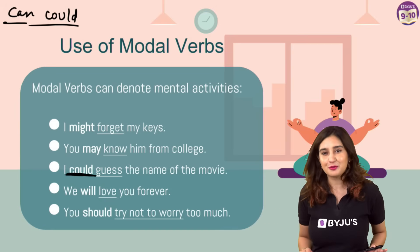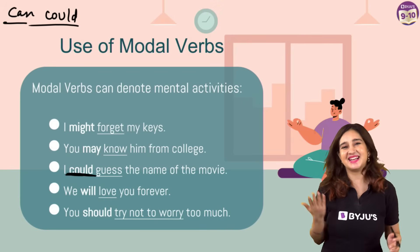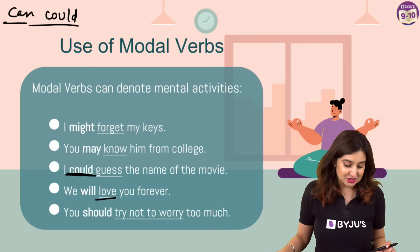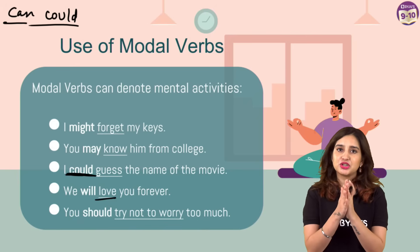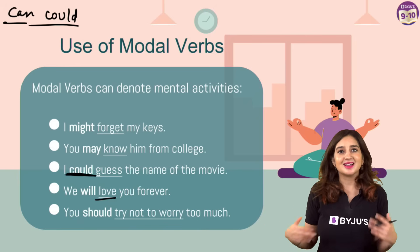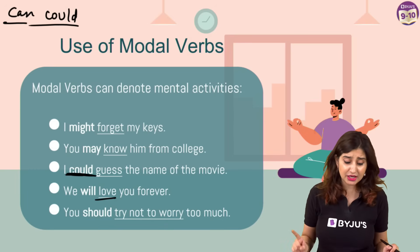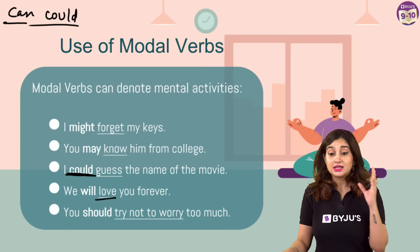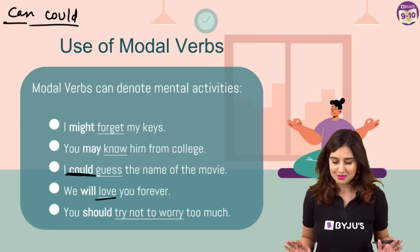'We will love you forever.' Love is your verb - something parents perhaps feel about their children; will here expresses a resolve or commitment. 'You should try not to worry too much' - worrying is a mental activity. Here, should is giving a suggestion that you should try not to worry too much.